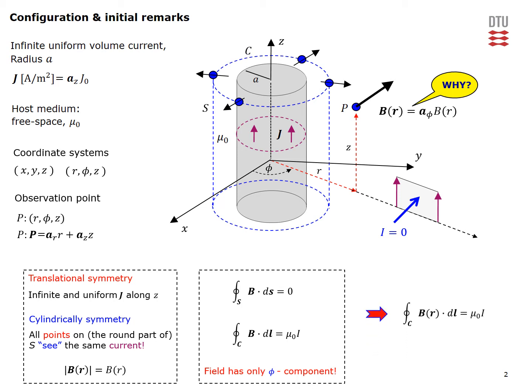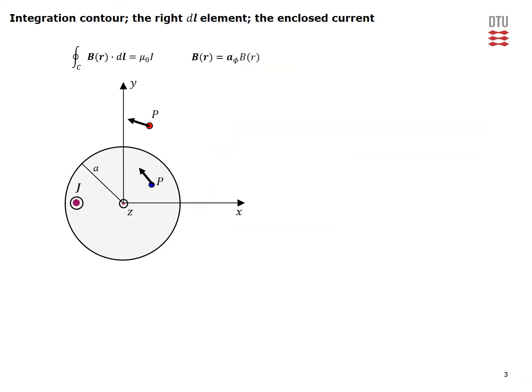This means we can apply Ampere's law on a cylindrical path — which can be either inside or outside the wire — to determine the B field. On this slide, we will work out the details of the integration contour, the differential length element DL, and also the enclosed current.